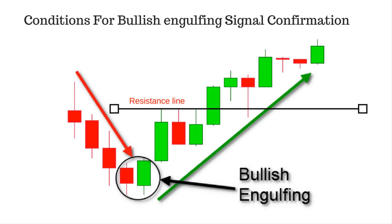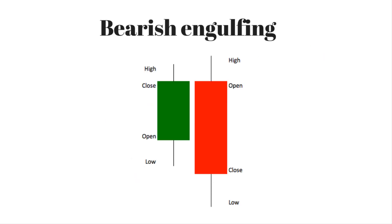That bullish candle should be a gap-down opening and close above the bearish candle's high. Third condition: traders should wait for the market to break the nearest resistance line after bullish engulfing pattern formation, then go for long.